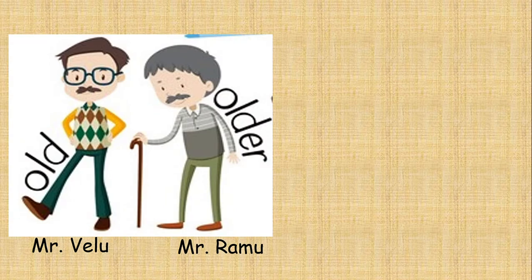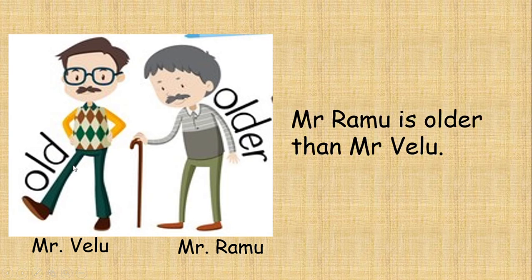The next one. Here we have Mr. Velu and Mr. Ramu. Mr. Velu is old. But Mr. Ramu is older than Mr. Velu. So we can say that Mr. Ramu is older than Mr. Velu.